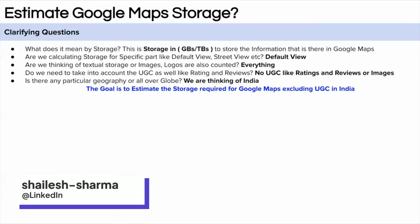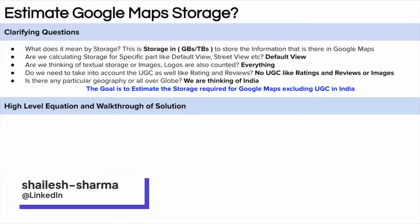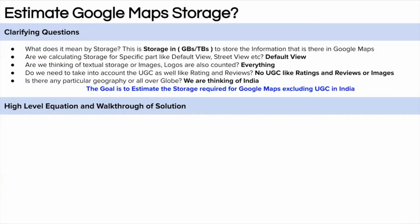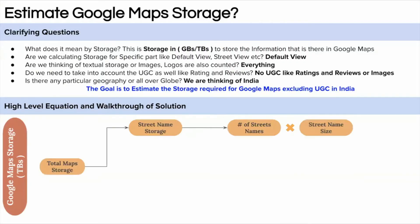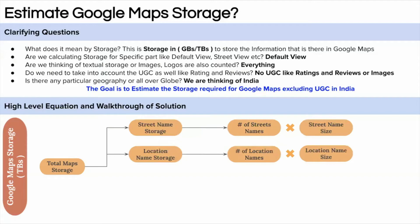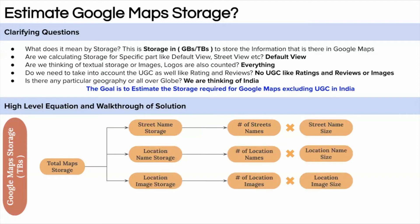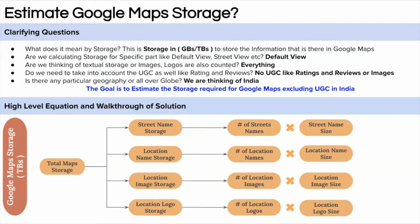Now let's discuss the high-level equation and the walkthrough of the solution. We need to calculate the total map storage, which would be the storage for street names, storage for location names, storage for location images, and storage for the location icon or logo.